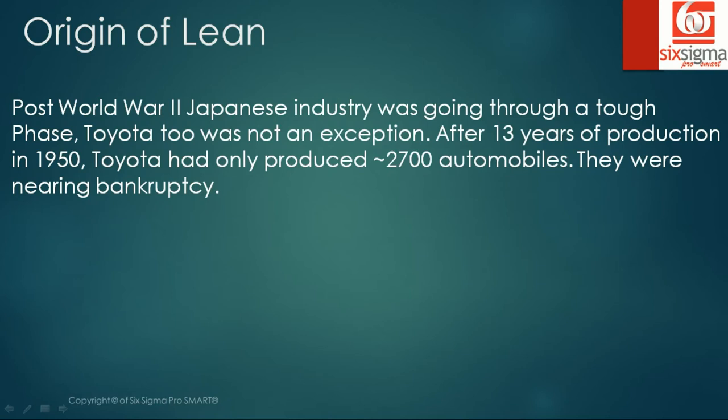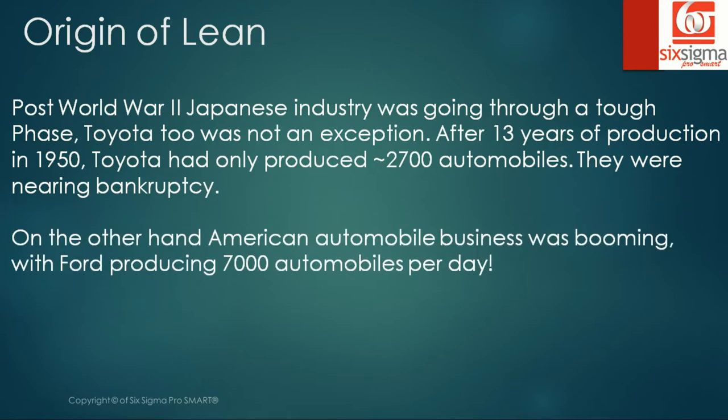Let's discuss the origin of lean. It was in the 1950s, post the Second World War. Japanese industry was going through a tough phase and Toyota was no exception. After 13 years of production in 1950, Toyota had only produced around 2,700 automobiles and they were nearing bankruptcy. On the other hand, American automobile business was booming, with Ford producing roughly 7,000 automobiles per day.